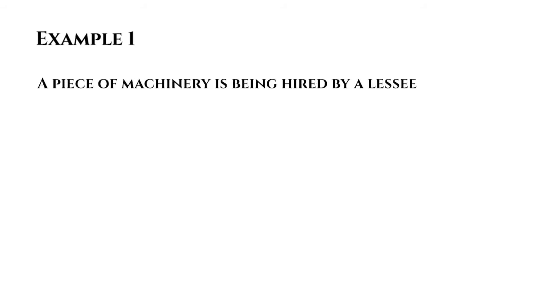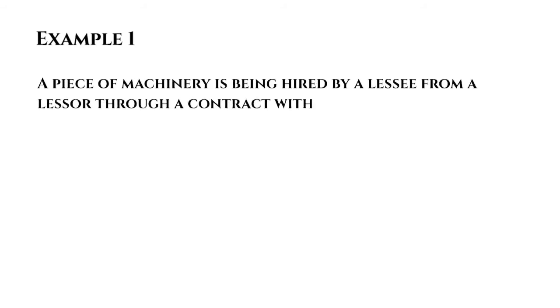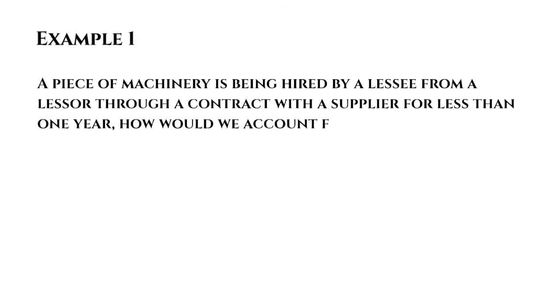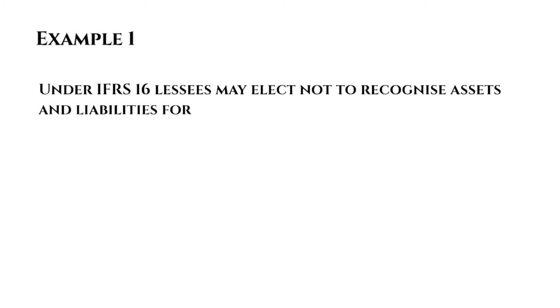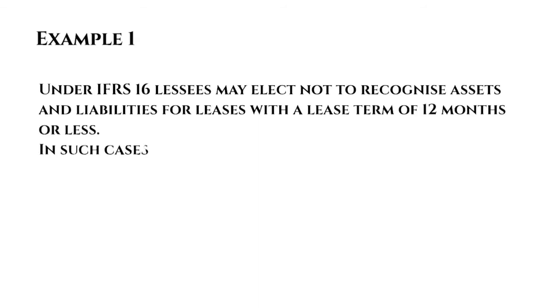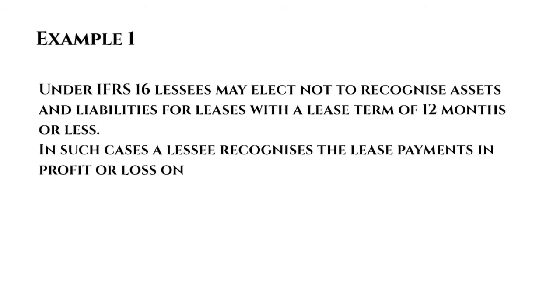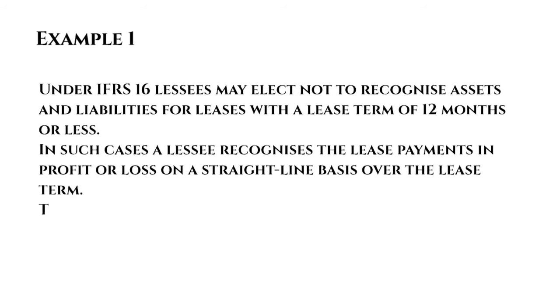So with example one, we have a piece of machinery that is being hired by a lessee from a lessor through a contract with a supplier for less than one year. Now the lessee is the individual who is leasing the asset, and the lessor is the one leasing the asset to you. Under IFRS 16, lessees may elect not to recognise a right-of-use asset or a liability where they have a lease term of 12 months or less. In such cases, the lease payments would go into the profit and loss statement on a straight-line basis over the term of the lease.